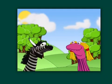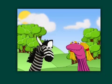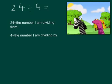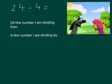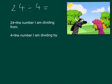Today, we're going to be using repeated subtraction to divide. So, here we have 24 divided by 4. Now, when we're dividing, 24 is the number I am dividing from. 4 is known as the number I am dividing by.